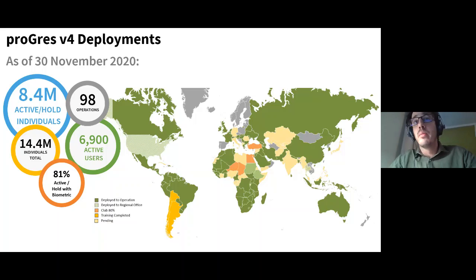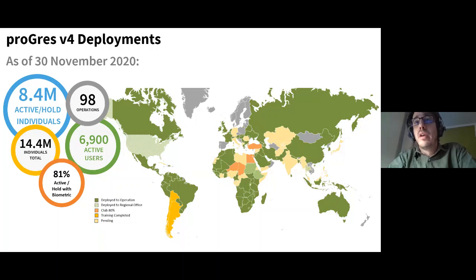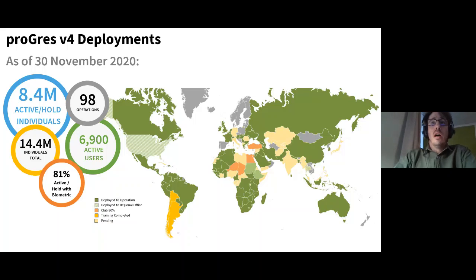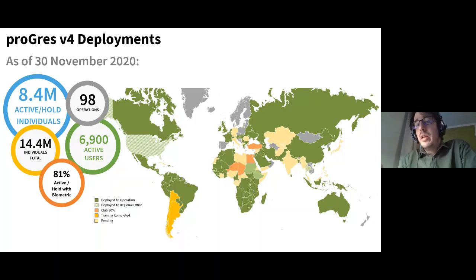We have 14.4 million individuals registered in Progress, of which 8.4 million are active or on hold — these are what we consider the active refugee beneficiaries or persons of concern currently in operations. We have over 6,900 active users. Importantly, this is not only UNHCR users, as Progress is also used by partners in quite a lot of operations — be they implementing partners, strategic partners, or government partners.